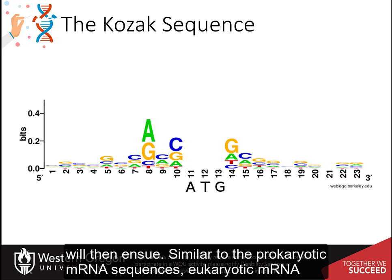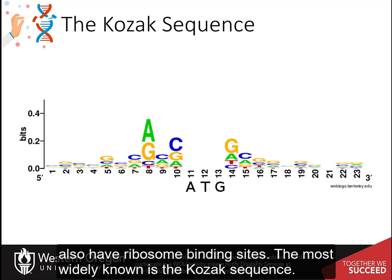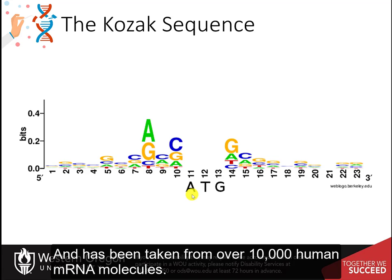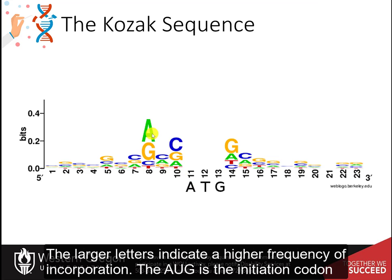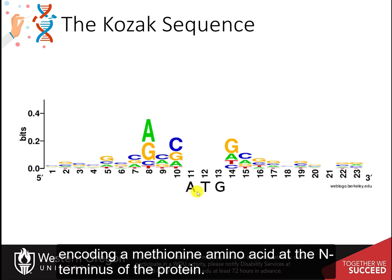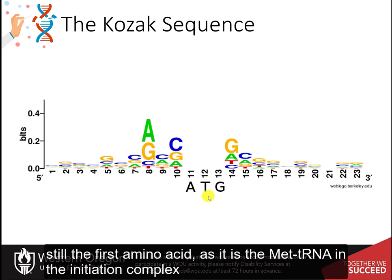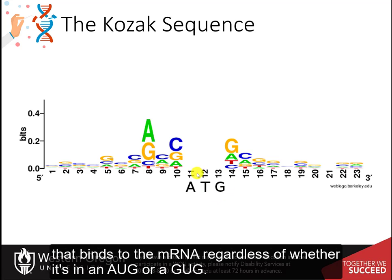Similar to the prokaryotic messenger RNA sequences, eukaryotic messenger RNAs also have a ribosomal binding site, the most widely known as the Kozak sequence. This sequence schematic shows the most conserved bases around the initiation codon and has been taken from over 10,000 human messenger RNA molecules. The larger letters indicate a higher frequency of incorporation. The AUG is the initiation codon encoding a methionine amino acid at the N-terminus of the protein. Rarely, GUG can also be used as an initiation codon, but methionine is still the first amino acid, as it is the met-tRNA in the initiation complex that binds to the messenger RNA regardless of whether it's an AUG or a GUG.